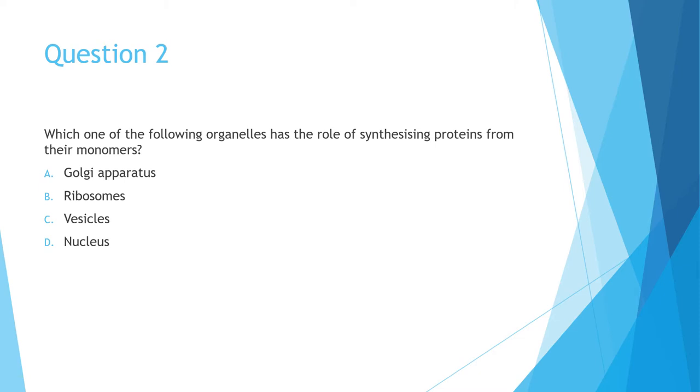Question 2 asks which of the following organelles has the role of synthesizing proteins from their monomers? And the answer is, of course, ribosomes. This is once again a well-answered question with 87% of the cohort answering correctly. Golgi apparatus is a stack of flat membrane sacs where the final synthesis and packing of proteins into membrane-bound vesicles occur. Ribosomes are the tiny organelles in the cytosol and they are the site of production of proteins. They may be associated with endoplasmic reticulum, which makes those rough ER, whereas those lacking ribosomes are termed smooth ER. Vesicles are organelles associated with the transport of particles across the plasma membrane. Nucleus contains the genetic material of the cell and controls cellular activity.